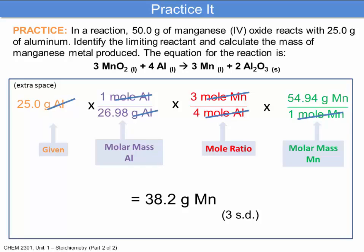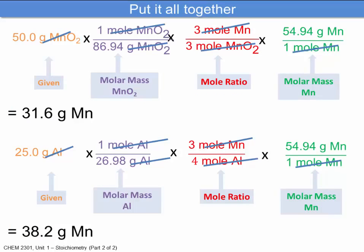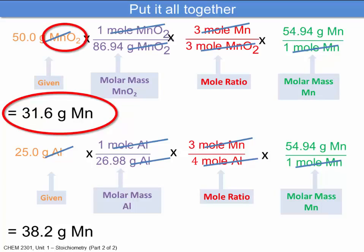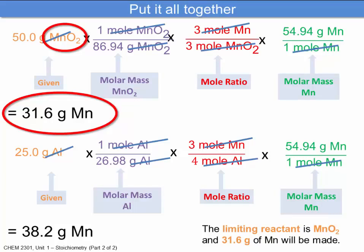We can compare the two values side by side. The manganese(IV) oxide produces 31.6 grams of manganese, and the aluminum produces 38.2 grams of manganese. The 31.6 grams produced by the manganese(IV) oxide is the smallest value, so the manganese(IV) oxide is the limiting reactant — we'll only produce 31.6 grams of manganese. Therefore, the aluminum will be in excess.